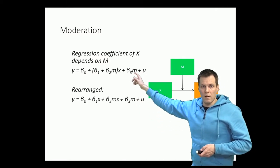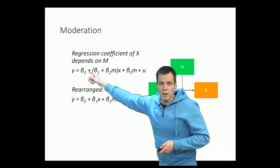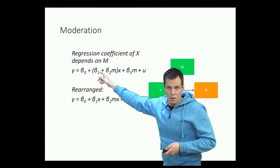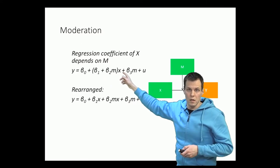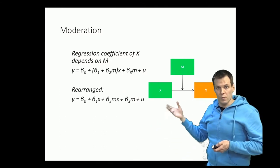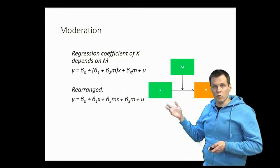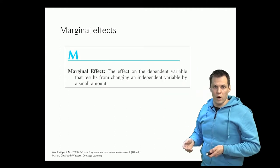Here this equation shows that the effect of x on y is no longer constant. So it's not a constant effect like we had in regression analysis, because it depends on the value of m. To understand how we interpret these effects that are not constant but depend on another variable, we need to introduce the concept of marginal effect.